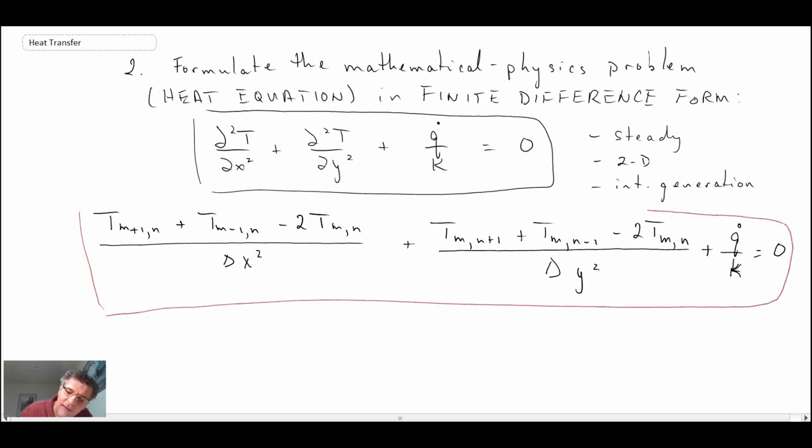The Tmn in these equations refers to the temperature at nodal location m,n. The m,n subscripts are basically just a bookkeeping approach that we use in order to keep track of the temperatures at different points within our grid that we generate in the first step. That is the second step - you recast your mathematical physics equation.